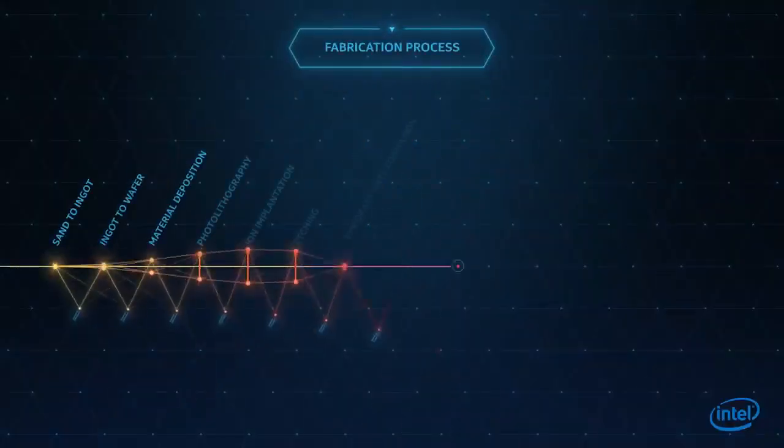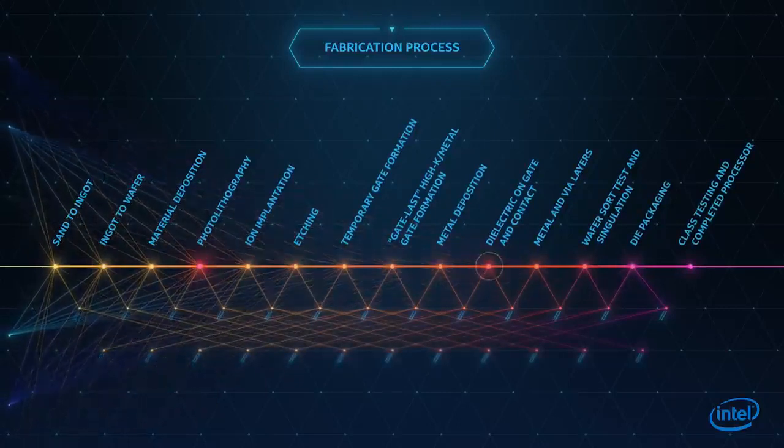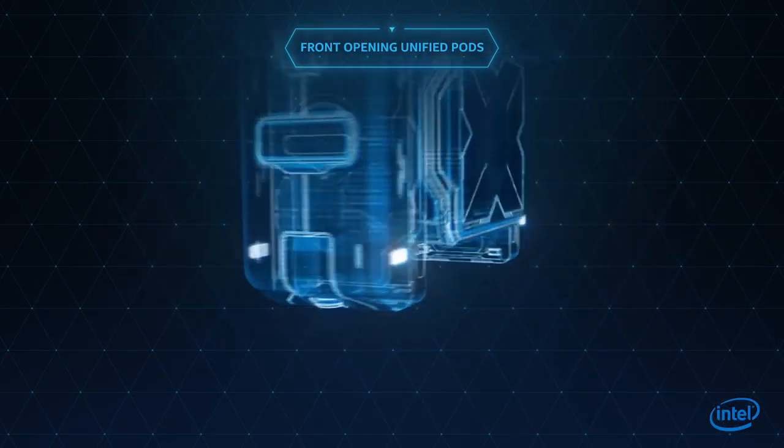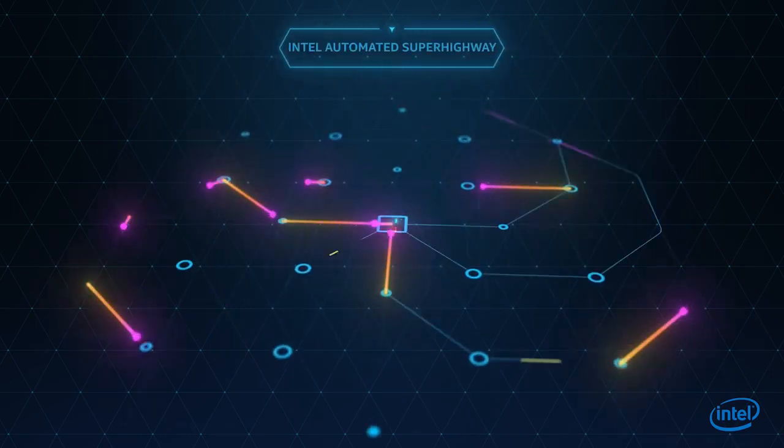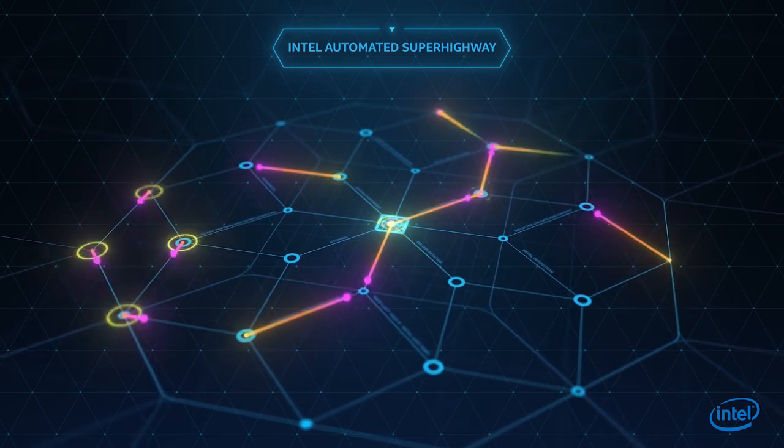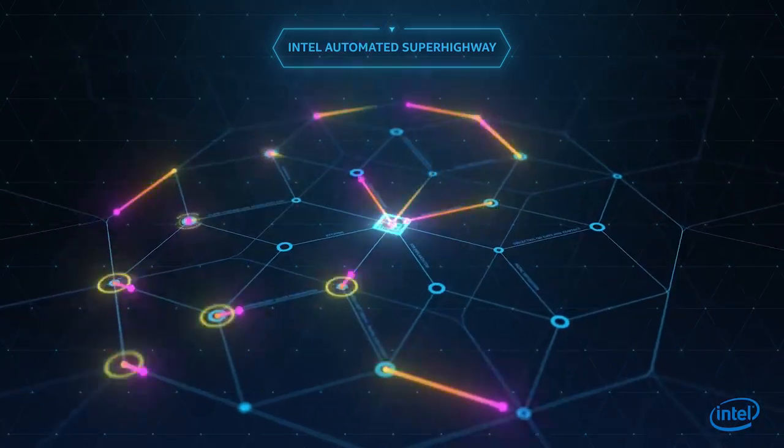Once inside an Intel fab, the raw wafers begin their long journey through an incredibly complex process. They're loaded into front-opening unified pods, or FOUPs, which travel hundreds of miles along Intel's automated superhighway, going from tool to tool, as processors are painstakingly built up on each wafer.